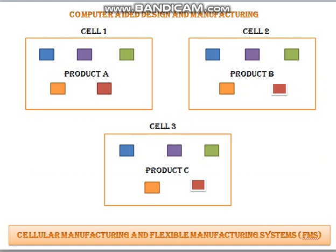In this case, the parts having similar manufacturing requirements can be entirely processed in one cell and then used according to the requirement of production. This is similar to that of group technology.